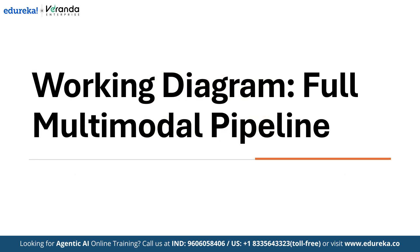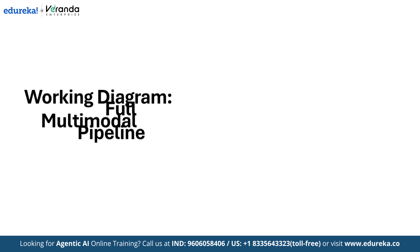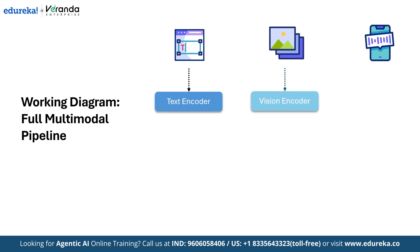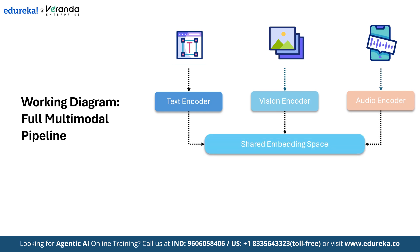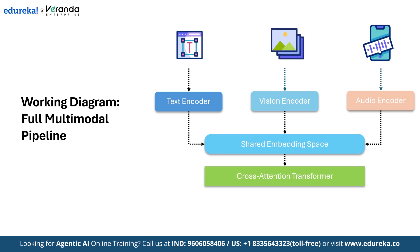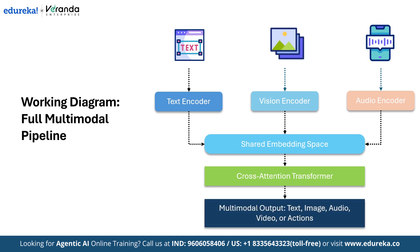Now let's go through a working diagram of a full multimodal pipeline. First, it takes different inputs — it could be text, image or even a video. Then it uses encoders for each modality. These inputs are then translated into a common AI language. Then a multimodal transformer uses cross-attention to connect relationships across text, images and audio, and finally the model generates a response.